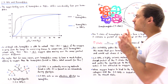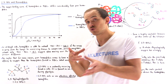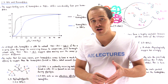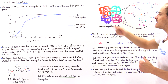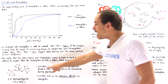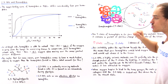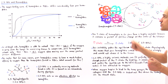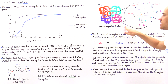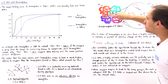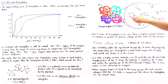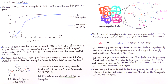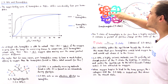In the presence of 2,3-BPG, the molecule is small enough to fit inside the positively charged pocket at the center of deoxyhemoglobin in the T state, and its negative charges interact with the positive charges of residues on the beta-1 and beta-2 subunits. Zooming in on this interaction, the three residues on beta-1 with positive charges are histidine-141, lysine-82, and histidine-2.